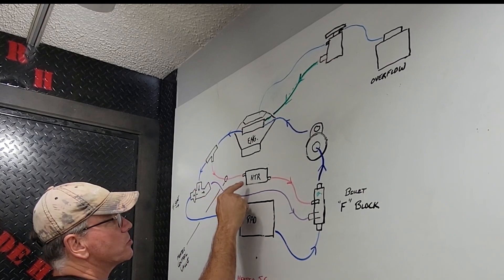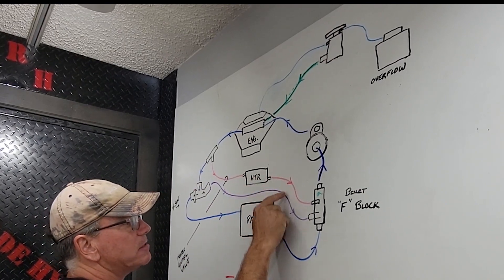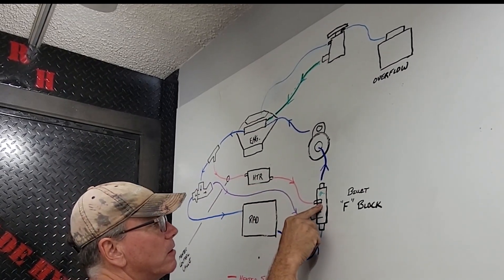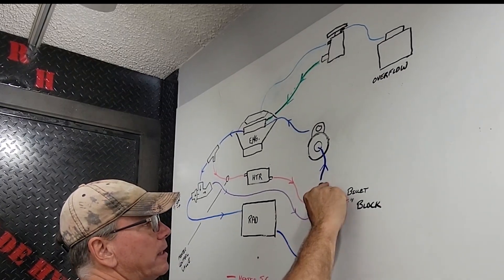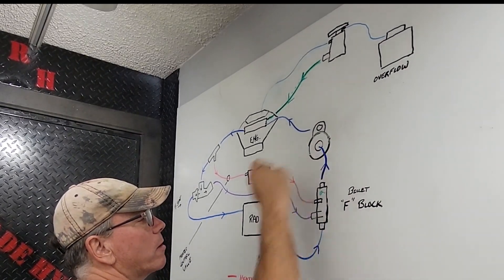Your heater loop goes through the heater core. This is five eighths, goes into the F-log here. And then the outlet inch and a quarter goes into the water pump there.